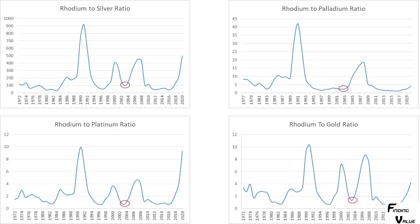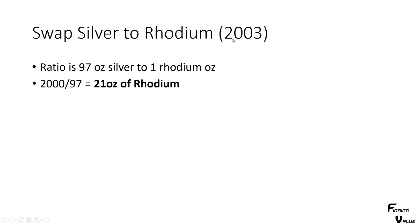We continue to look at ratio charts and monitor when we see low points and high points. When we have low points, we want to swap our metals into something that is cheaper. What we're looking at here is the rhodium-to-silver ratio. We see that rhodium is cheap in relationship to silver at this point — in 2000 it was expensive, but in 2003 it's cheap. Rhodium to palladium is cheap, rhodium to gold is cheap, and rhodium to platinum is cheap in 2003. So when you're cheap to all of the other metals, we know that rhodium is by far the best deal and we should swap our silver to rhodium. So in 2003, we swap our silver to rhodium. The ratio is 97 ounces of silver to one ounce of rhodium, so 2,000 ounces divided by 97 gives us 21 ounces of rhodium. So now in 2003, we own rhodium.